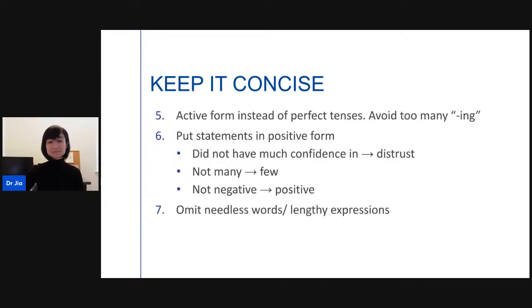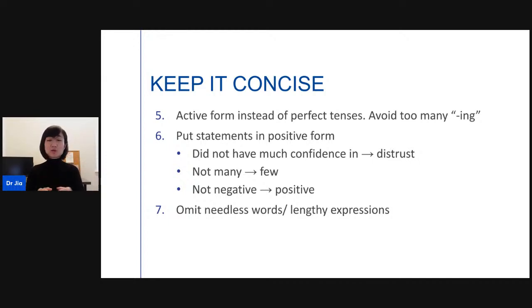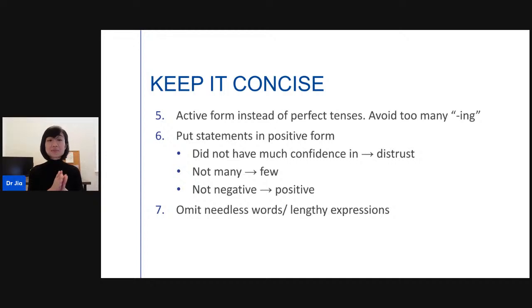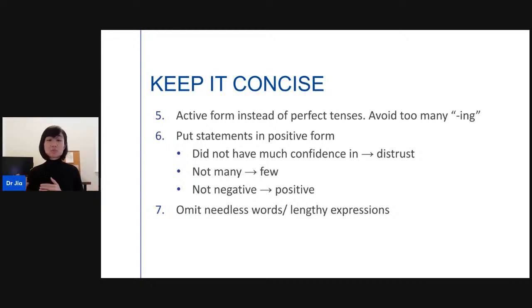You can also make sure you use the active form instead of perfect tenses. Active form means 'I eat, I drink, I bake' instead of 'I am baking' or 'I have been baking.' It keeps things more concise and avoids the '-ing' endings, reducing syllables so you're not putting as much effort on the reader's mind. Also, put statements in positive forms — for example, instead of 'did not have much confidence in,' replace it with 'distrust'; instead of 'not many,' say 'few.'